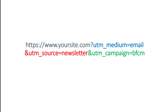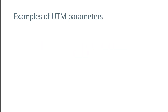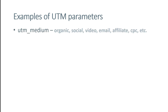Medium, source, and campaign are not the only UTM parameters supported by Google Analytics 4. UTM medium is the most generic, top-level parameter — these are large buckets of your traffic types. For example, 'organic' means search engines, then there might be 'social', 'video', 'email', 'affiliate', or paid advertising known as 'CPC', and so on.